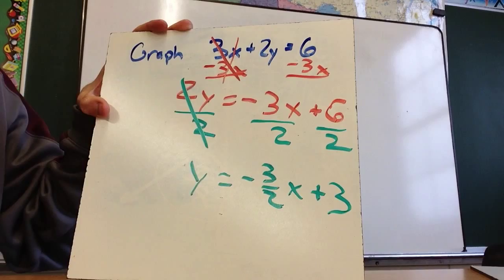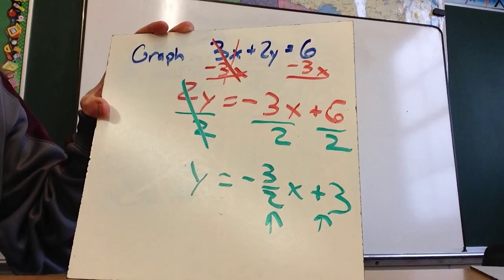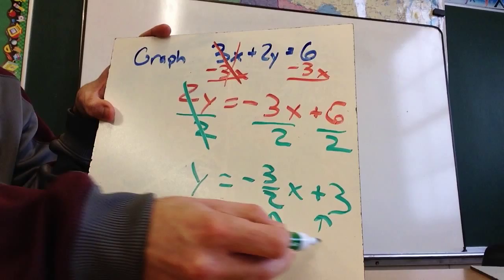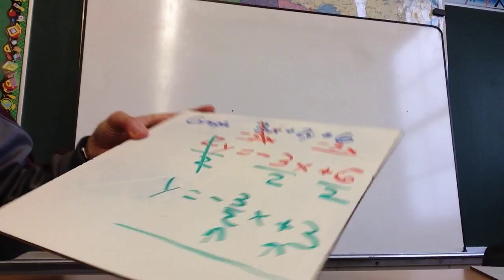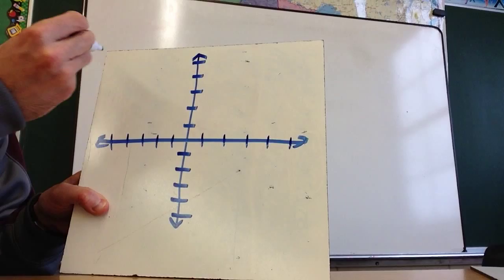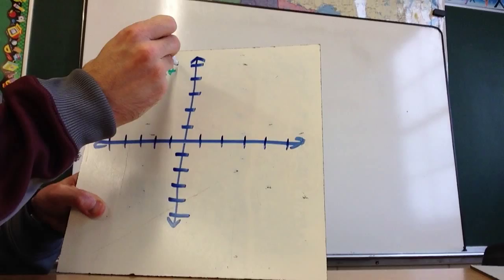So I now know that this is my slope, and this is my y-intercept. So I'm now going to graph this on a coordinate plane. So I'm going to rewrite this equation, negative 3 over 2, negative 3 halves x plus 3. So I'm going to rewrite this up here so I make sure I have it. y equals negative 3 halves x plus 3.